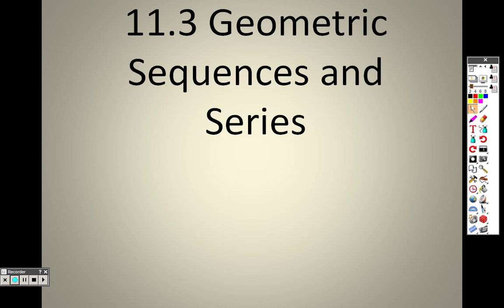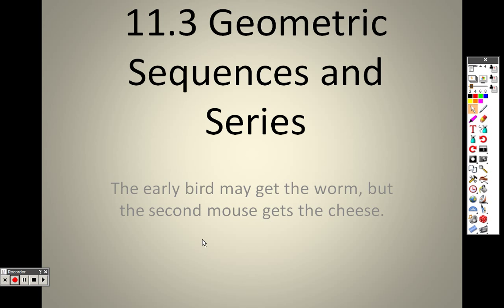11.3 Geometric Sequences and Series. This is the last section we are going to go over in 11.3. In Algebra 2 we aren't concerned with much more than this, but this will help you find out another type of series. We went over the first one which is arithmetic, and there's a formula. And now there's a geometric type, and I can give you almost every single type of equation to find the sequence or series.